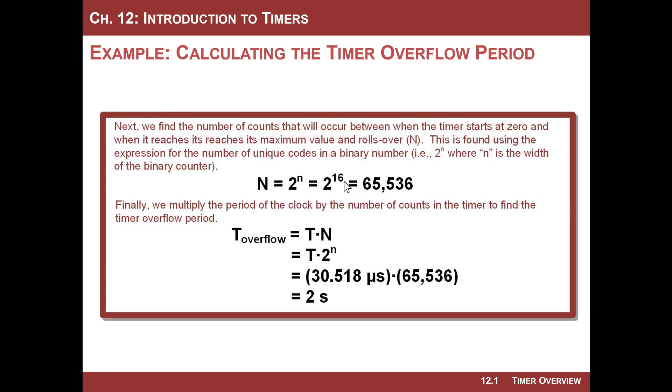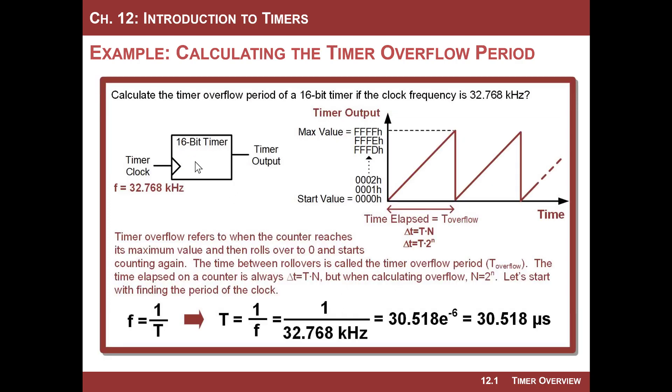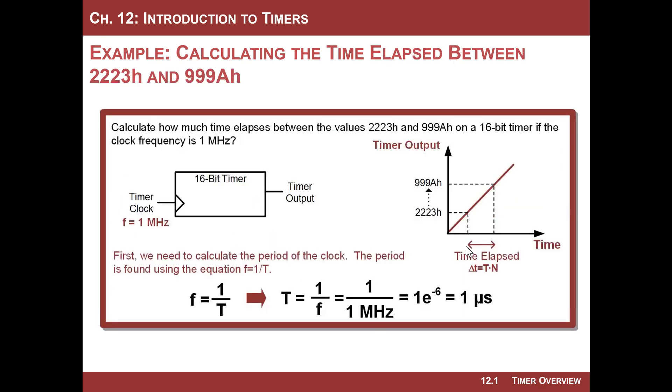And now all I do is multiply that by 2 to the n. 2 to the n for a 16-bit counter is 2 to the 16. That is 65,536. I go ahead and multiply that by the period of the clock, and I get, voila, 2 seconds. So in this example, if I had a 16-bit counter and I clocked it at 32 kilohertz, every 2 seconds, this thing would overflow. So 2 seconds, boom. 2 seconds, boom. 2 seconds, boom. That's good to know because maybe what I can do is have the timer system notify me, maybe even trigger an interrupt every time there's an overflow. Very powerful.